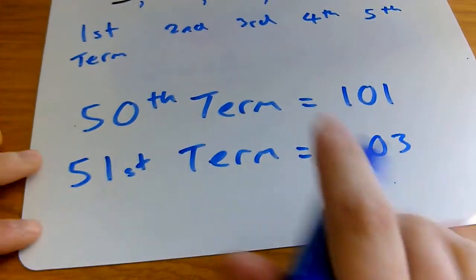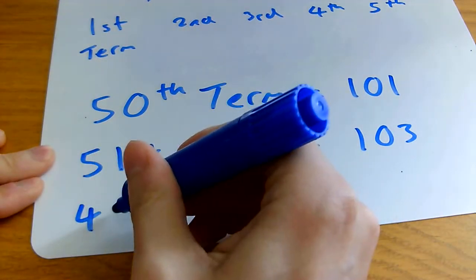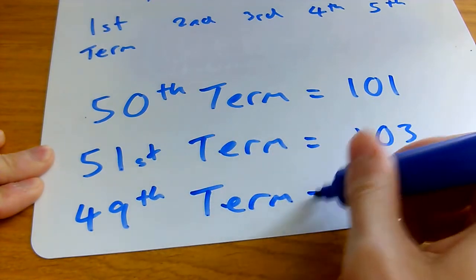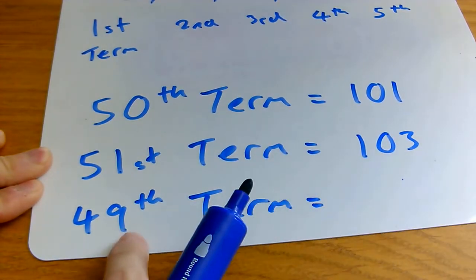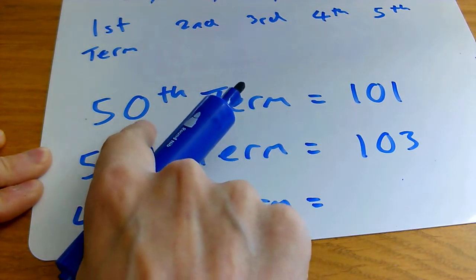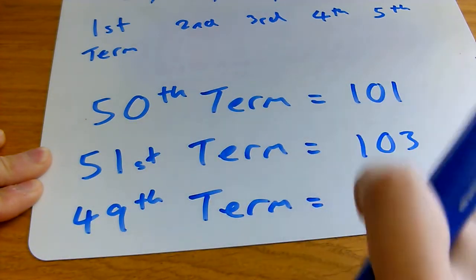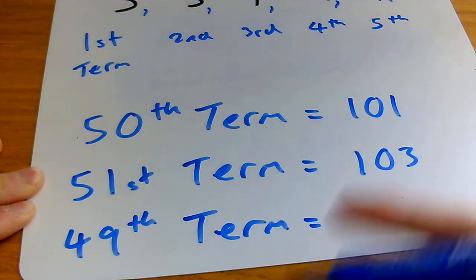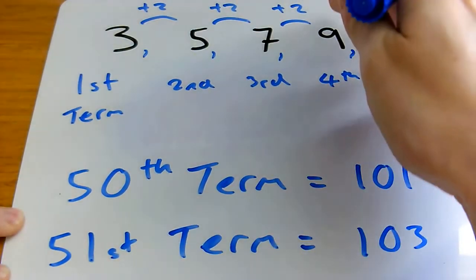You could also work out the 49th term using a similar rule. Well, the 49th term is the one before the 50th, and that was 101, so to get the 49th term you have to go back. That would mean subtracting 2, so actually you'd get 99.